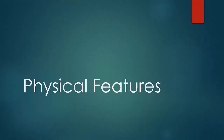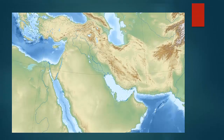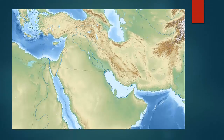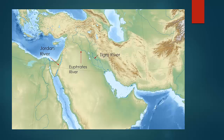Now moving on to physical features. We'll start off with the rivers: the Jordan River, the Euphrates River, which flows through Iraq, and the Tigris River, which also flows through Iraq.